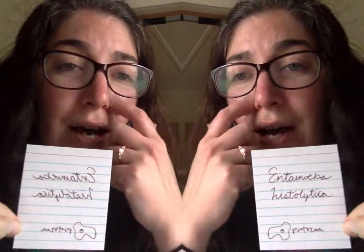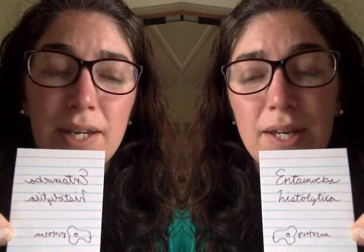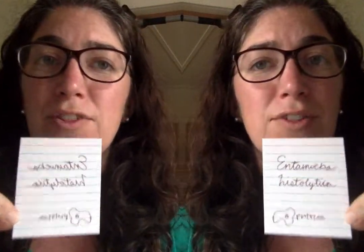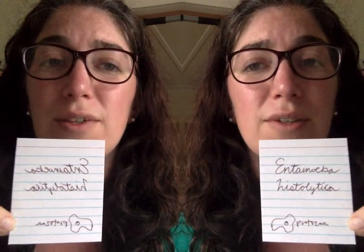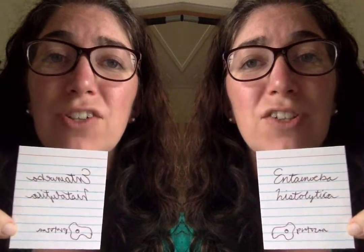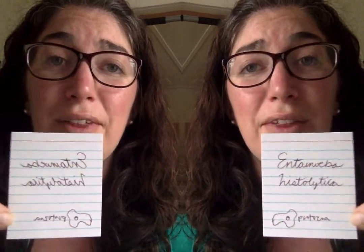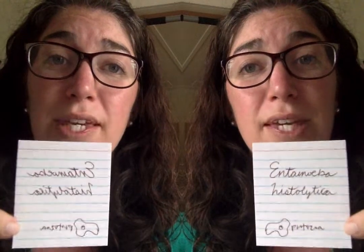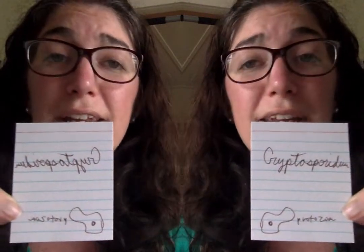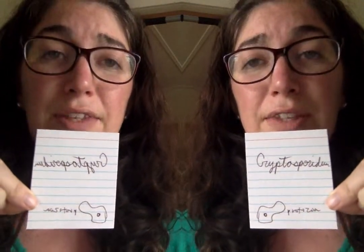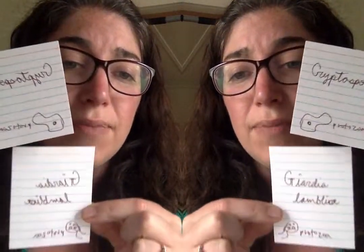Entamoeba histolytica is a protozoan that can cause intestinal infections, primarily from contaminated drinking water — like if you're out hiking and drink water from a stream or pond, or if you're in another country using contaminated water sources. Protozoan infections tend to cause more chronic diarrhea rather than acute diarrhea, so you can have it for several weeks or even months. Cryptosporidium is another protozoan pathogen that can cause acute diarrhea.